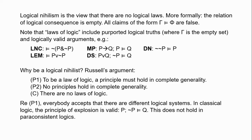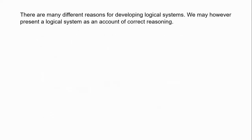Looking at this proliferation of different logical systems, you might be tempted to say premise one is false — that logical principles don't have to hold in complete generality. But that would obviously be a misunderstanding. We can develop logical systems for all sorts of different purposes, but one of the reasons to develop a logical system is to offer an account of correct reasoning — a theory which tells us when the premises of an argument entail the conclusion.